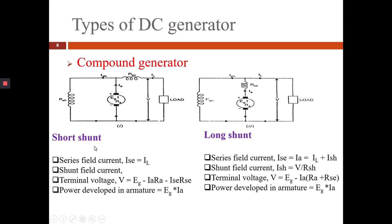In case of short shunt, series field current ISE equals IL and the terminal voltage V equals EG minus IARA minus ISERSE and power developed in armature equals EGIA.